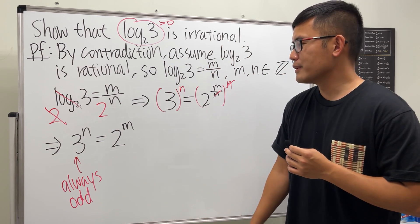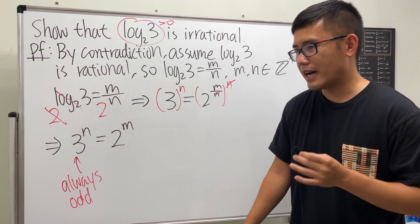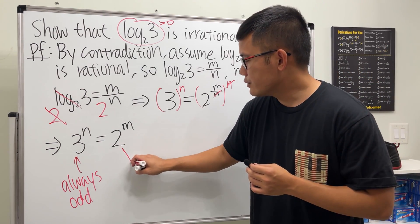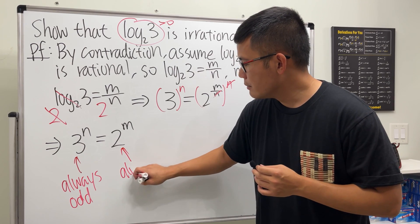3 to the first power is 3, 3 to the second power is not 6, it's 9, 3 to the third power is 27. It's always going to be odd. And then this right here, 2 to any positive integer power is always even.